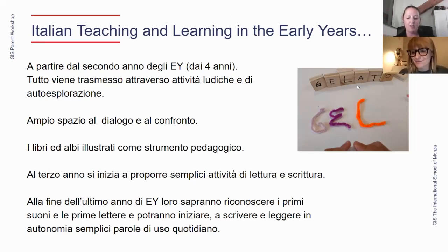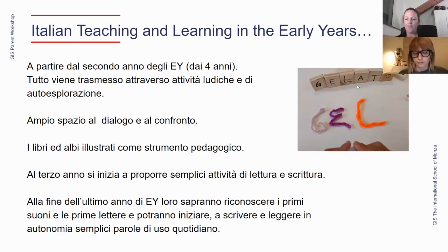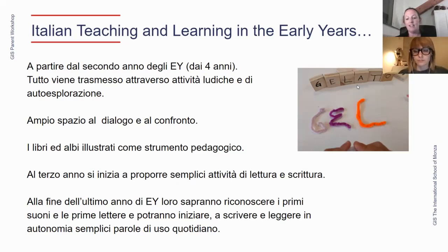So in the early years, students have two lessons of Italian of one hour each, starting from early years two, from the age of four. Students are taught through self-expression and playful activities which stimulate curiosity towards the language, developing listening and comprehension skills using books and images. In early years three, children begin simple reading and writing in collaboration with the English teacher, as the sounds of some letters are very different from Italian to English. By the end of early years, the children will be able to know some first sounds and letters and through play will begin to read and write independently some simple common words.